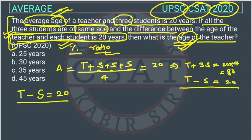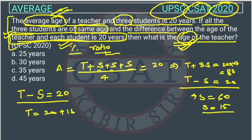Subtracting the second equation, we get 4S equals 60, so S equals 15. Substituting the value of S, T equals 20 plus 15, which equals 35. The teacher's age is 35 years.